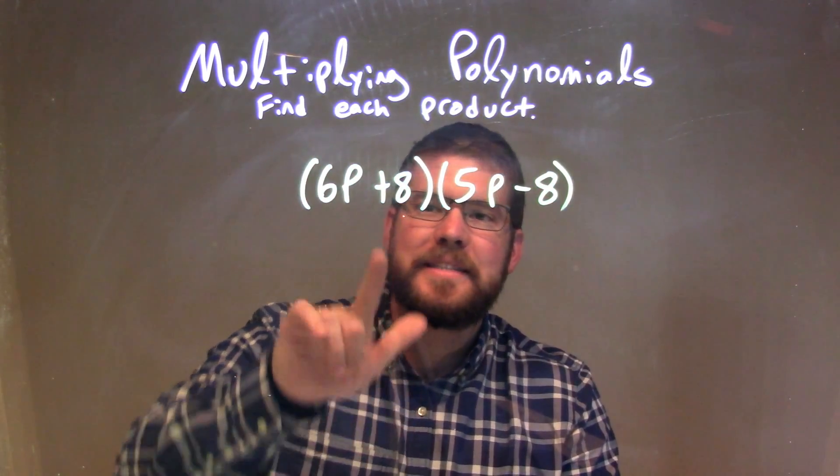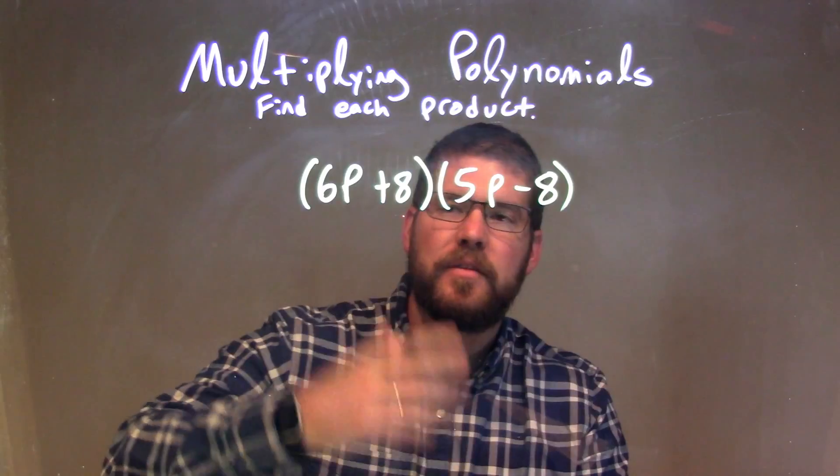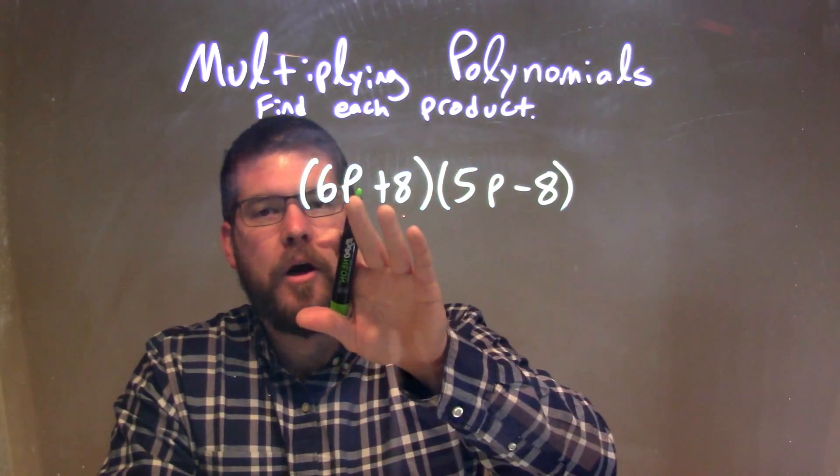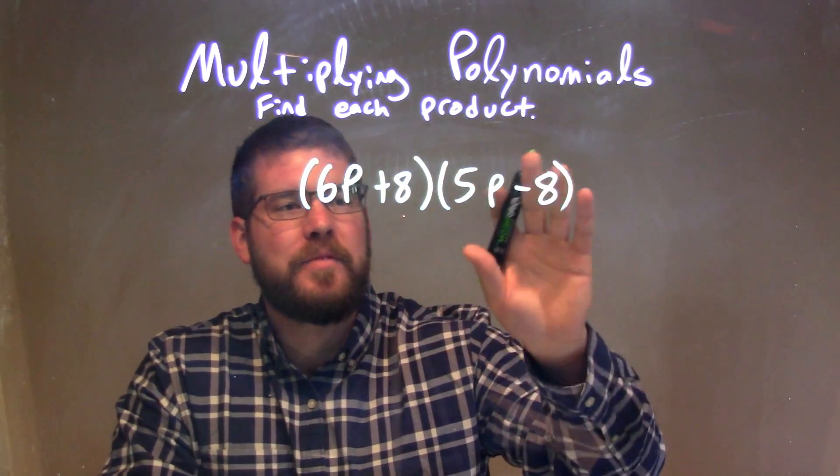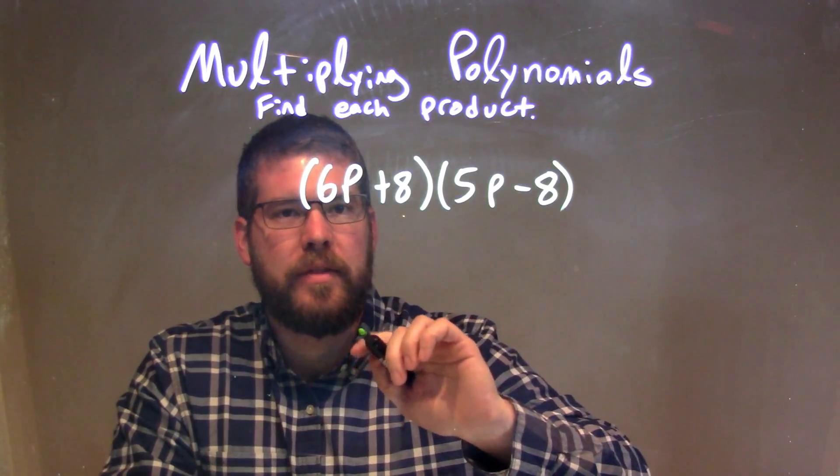There's no way we can simplify within each parenthesis, so now we're going to multiply all parts of my first parenthesis times all parts of my second parenthesis.